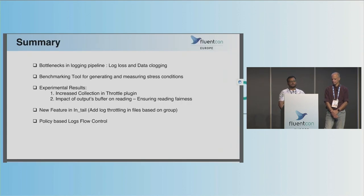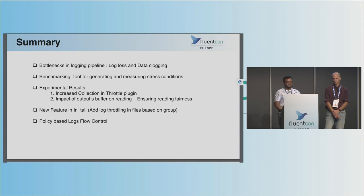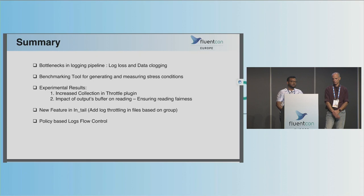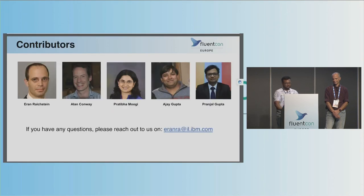To summarize: we identified bottlenecks in our cluster logging pipeline and showed a benchmarking tool for generating and measuring stress conditions. Through experiments, we showed how to increase collection via the Throttle plugin and the impact of output buffer size. We introduced a new group-based throttling feature in in_tail to control log loss and add input-level throttling. As part of our Red Hat work, we are building a policy-based log flow control system covering FluentD and Elasticsearch. Please feel free to reach out to our team with any questions.